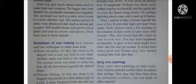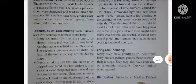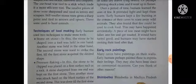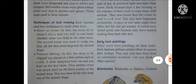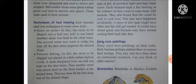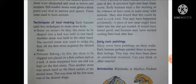Aur kaha jaata hai ki jo lightning hoti hai, bijli chamki aur woh pedon par giri aur aag lag gayi. Over a period of time, humans learned the uses of fire. Pehla use tha ki it provided light and kept them warm — unko garmahat dene ke liye. Early humans kept a fire burning at the entrance of their caves to scare away wild animals — woh apni gufahon ke bahar raat ko aag jalaya karte the, taaki jungle jaanwar darke maare wahan se wapas bhaag jayein.